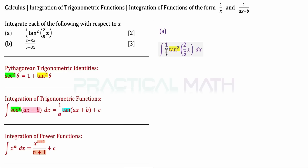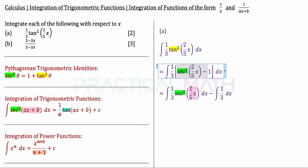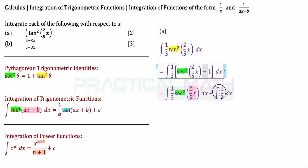In part A, we integrate (1/3)tan²(2/5 x) dx. First, convert the tangent square using the Pythagorean Trigonometric Identity: tan²θ = sec²θ − 1. So we replace tan²(2/5 x) with sec²(2/5 x) − 1. The next step involves splitting the integral using the subtraction rule of integration, giving us: (1/3)∫sec²(2/5 x)dx minus the integral of (1/3)dx.